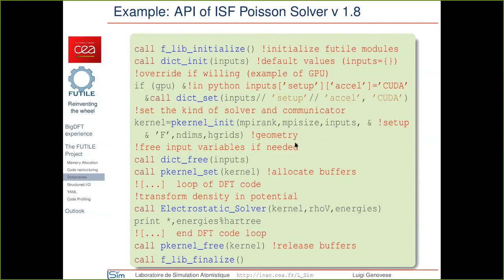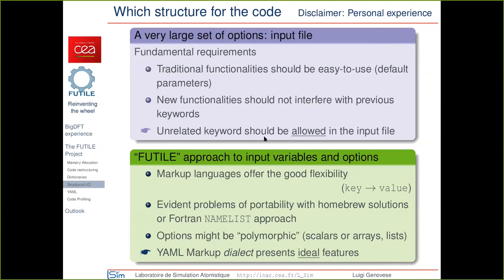One would like to map this dictionary approach into input and output parameters — a key-value approach at the level of the input file, and also at the level of the output log files of the code. We have followed these ideas of having a key-value approach in the context of developing layers of libraries for density functional theory. This eventually brought us to the concept of including YAML as the syntax for BigDFT input and output files. Log files and input files have been written in YAML from BigDFT since a while, and these are features enabled by the Futile approach.